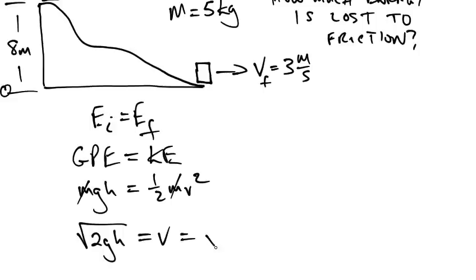So let's work this out. The square root of 2 times 9.8 meters per second squared times a height of 8 meters. That's going to give us, get our trusty RPN calculator out. 2, enter, 9.8 times 8 times. Take the square root of that, and we get 12.5.